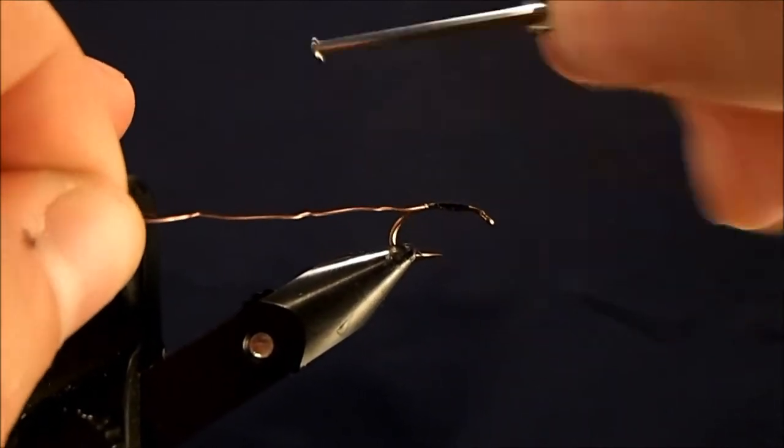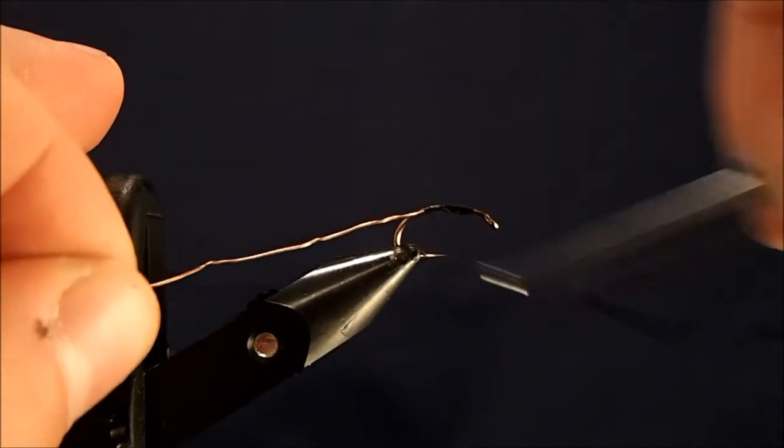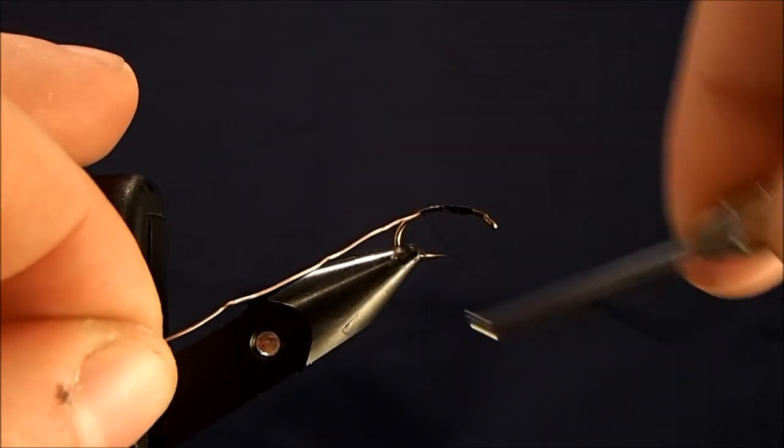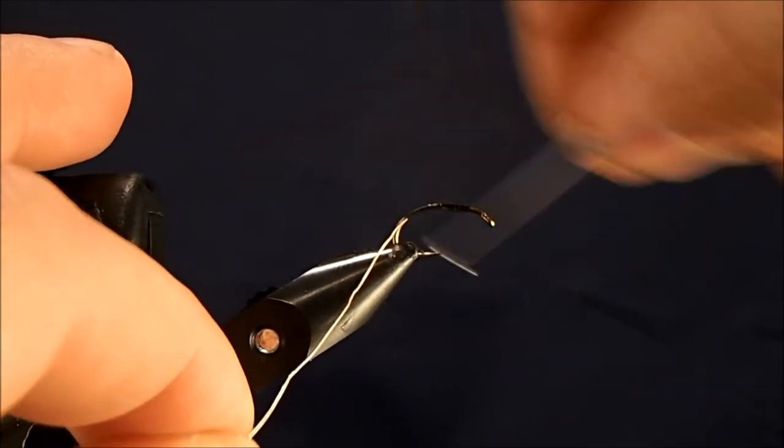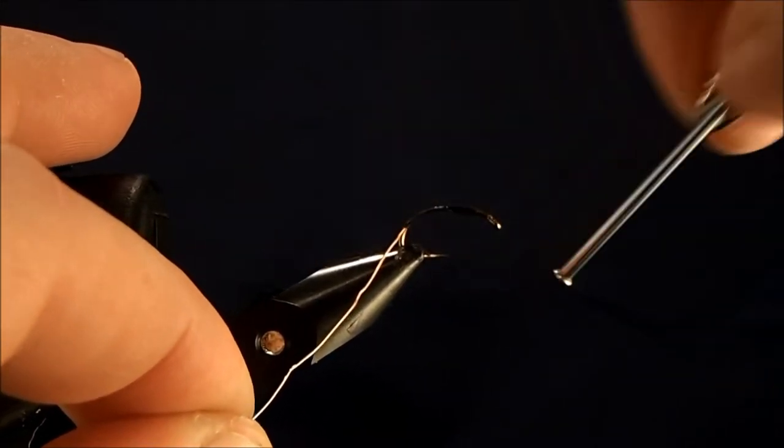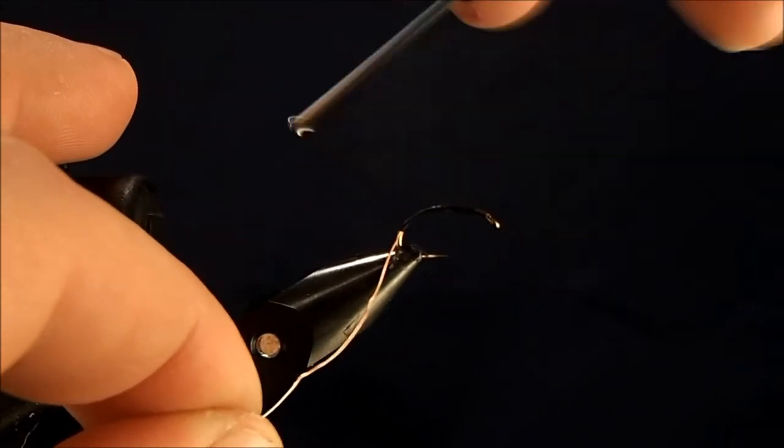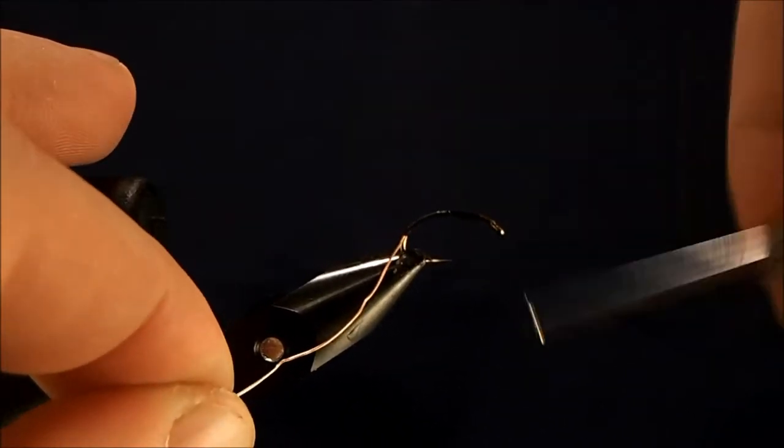And then the important piece to this is just following the contour of the hook all the way down, making sure that your copper wire falls right in line with that shape of the hook. Any deviation from that is going to be seen when you start to wrap the body up.